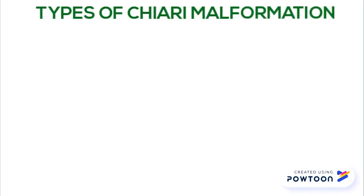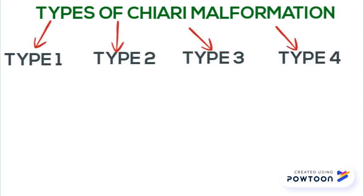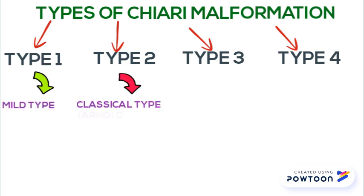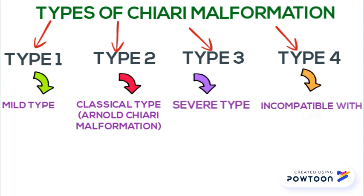There are four types of Chiari malformation. Type 1 is the mild type. Type 2 is the classical type, also called Arnold Chiari malformation. Type 3 is the severe type. And type 4 is incompatible with life.